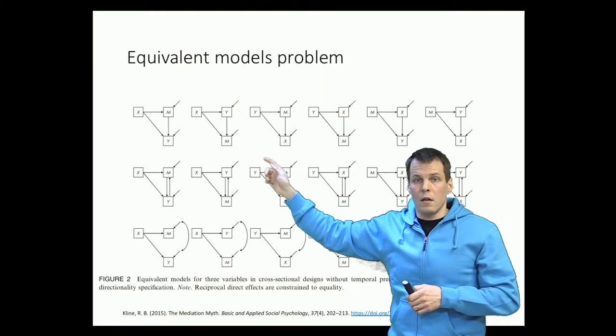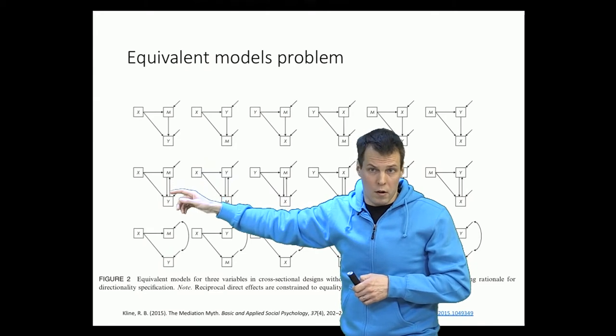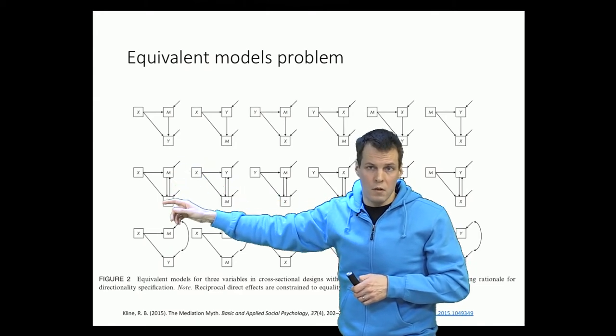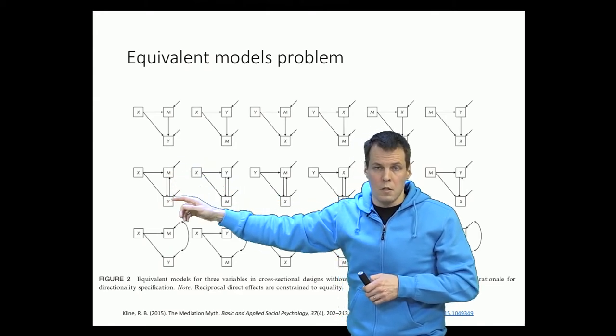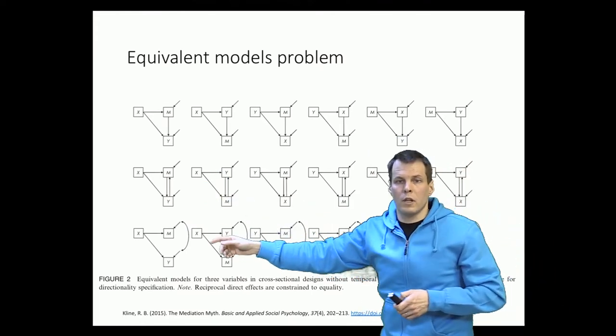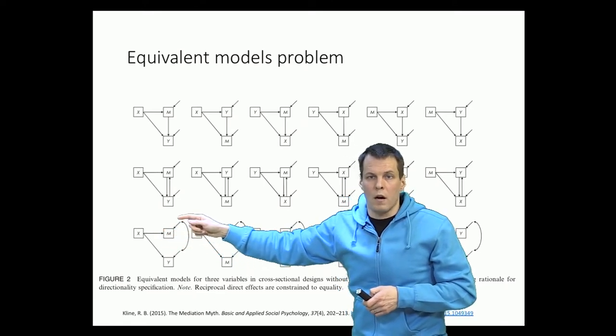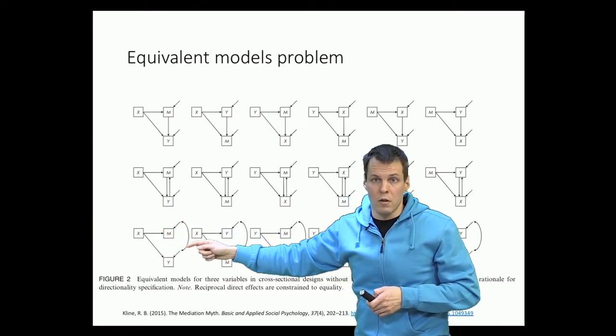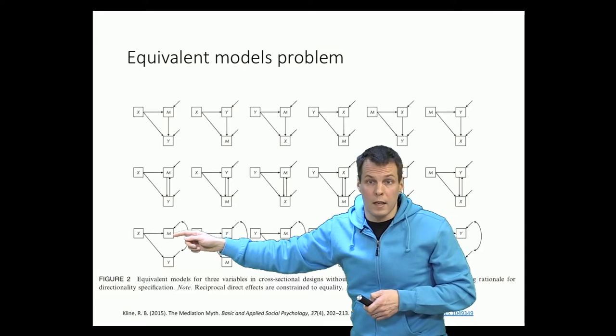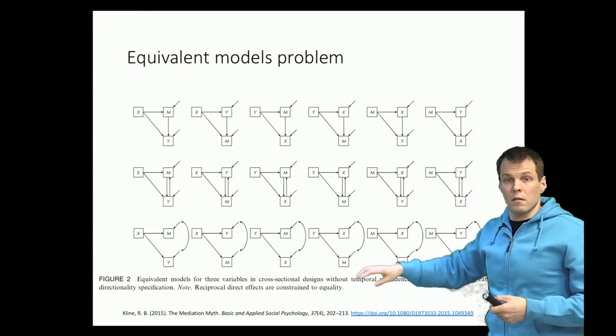Similarly, it's possible that instead of this model, you have this model with a bi-directional effect. This is called simultaneity in econometrics. We don't address that now. It's also possible that X is just a common cause of M and Y, and M and Y are correlated for some other reason, but there is no direct effect between M and Y. So empirically, all of these models are equally good.